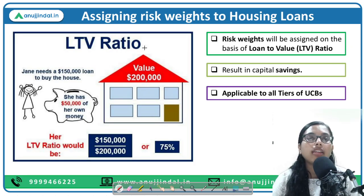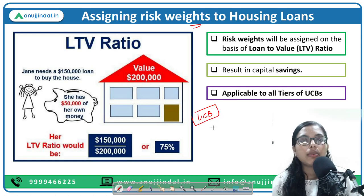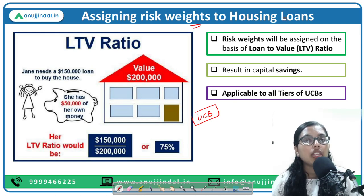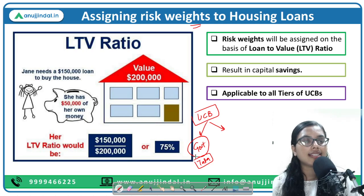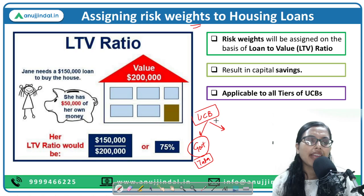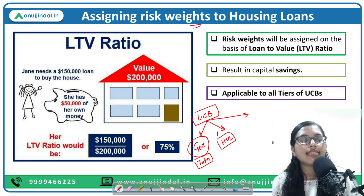The next regulatory change involves assigning risk weights to housing loans using the loan-to-value (LTV) ratio. Urban cooperative societies provide housing loans to various customers — a government entity, a large private institution like HUL, or a local retail kirana store. The question is: would you provide loans to all three at the same rate? No, because their creditworthiness differs. The government entity and a well-known company like HUL have higher reliability and lower default risk compared to a small local store.